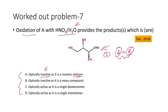One product has positive optical rotation and the other has negative rotation, so whatever mixture is obtained is optically inactive — that is option one. Another option is they are optically inactive but are meso compounds — that is option two. Option three is they are optically active as a single diastereomer. Option four is optically active as a single enantiomer. We need to find the correct answer.